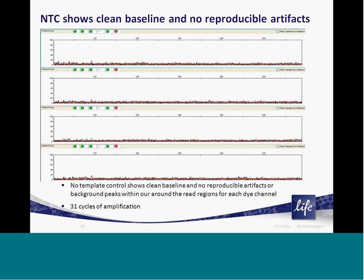Similarly, it is also important to demonstrate that following amplification of a no-template control, there are no reproducible peaks or artifacts that are present and can lead to false positive calls for the presence of a loci and its alleles. As you can see, at three amplification cycles above our highest recommended cycling settings, we are seeing a very flat baseline with no reproducible peaks that can interfere with your genotyping results.